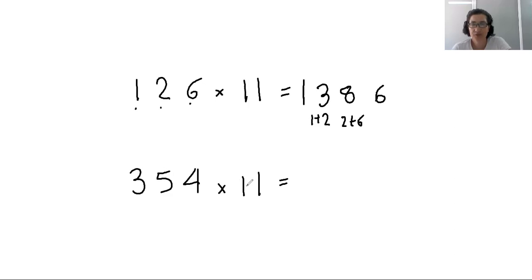So 354 times 11, we take the first digit, then first and second digit, which is 3 plus 5. Second and third digit, which is 5 plus 4, which is 9. And then the last digit, which is 4. So 354 times 11 is 3894.